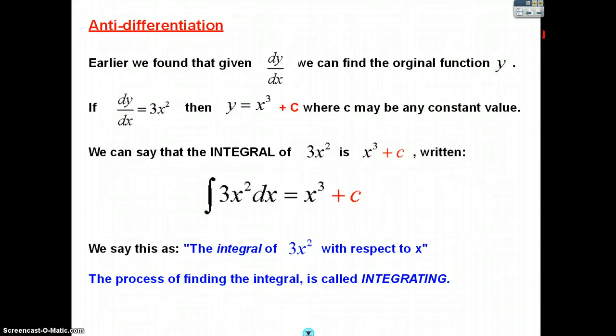So earlier we've talked about if we have dy/dx we can find the original function y. So an example of that, if we have dy/dx is 3x squared, we know pretty intuitively that y is going to equal x cubed plus c. Because when we differentiate this, that constant there can differentiate to 0 leaving just 3x squared.